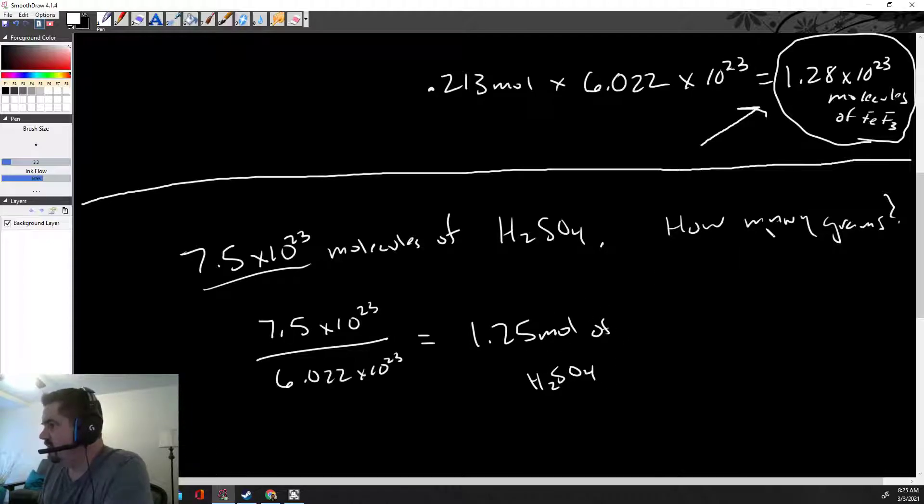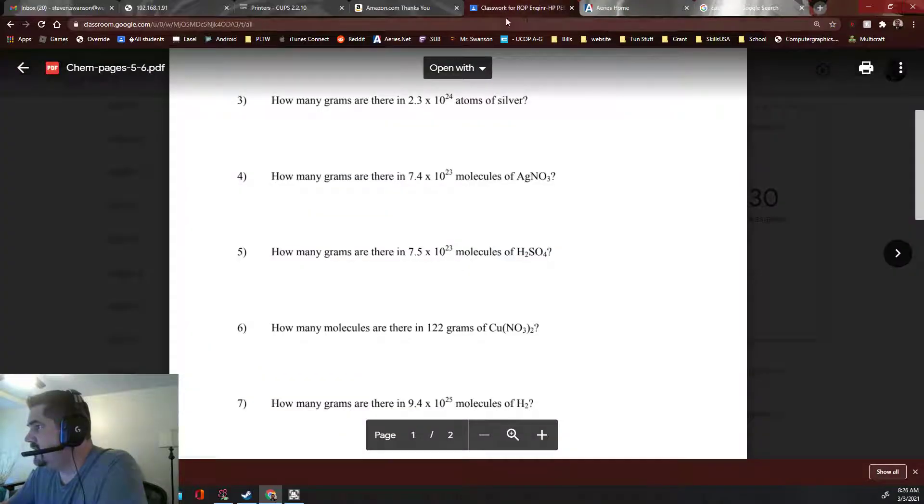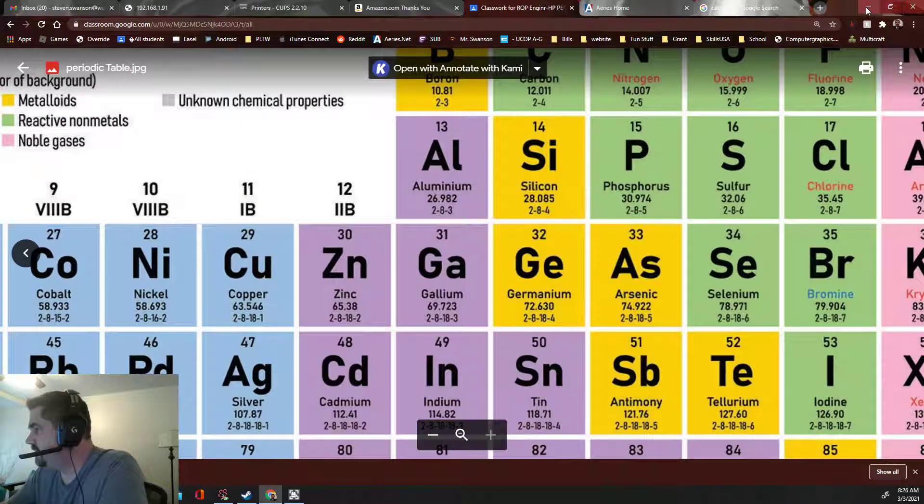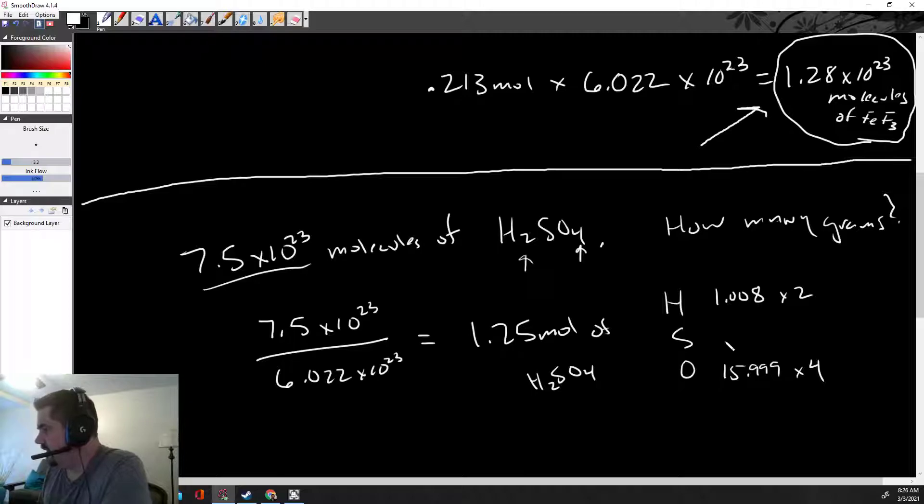Now I know how many moles. We're almost there to the grams. I just need to figure out the molar mass of this stuff. So H and S and O, those are all our elements in here. H, I remember, is 1.008, and it's times 2. There's two of them. Oxygen, I remember that one, is 15.999, really just 16. And there's four of them, times four. Two hydrogens, one sulfur. And what was sulfur? Let's go to the periodic table. 32.06. So we'll just call it 32.